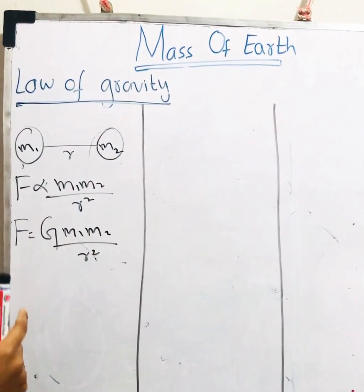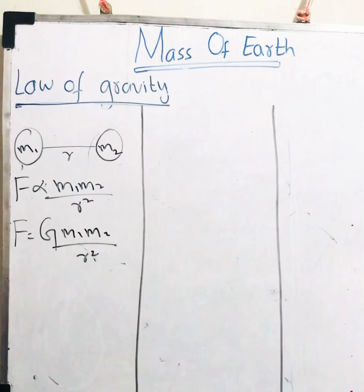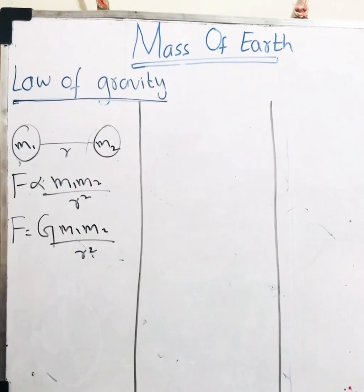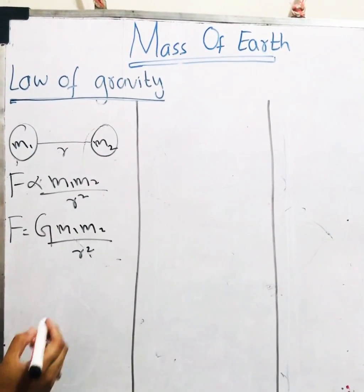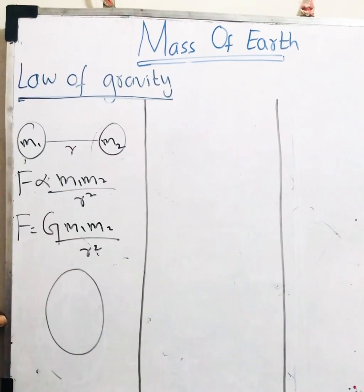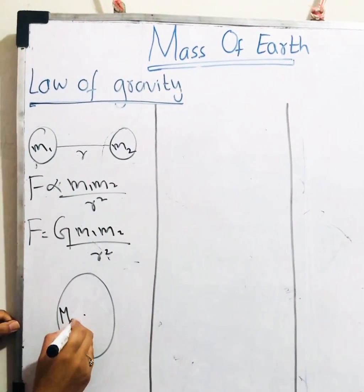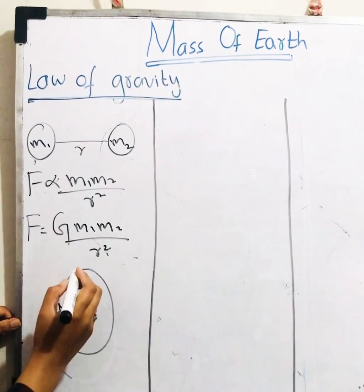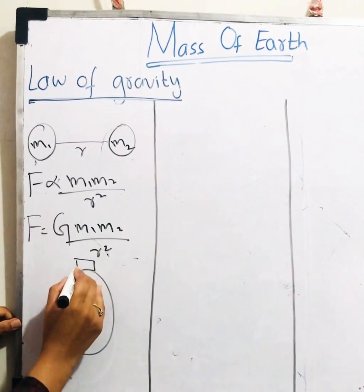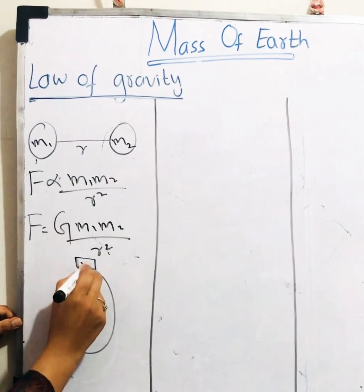If this law is clear for you, let's move to calculation of mass of Earth. For the calculation of mass of Earth, consider this is Earth. The center of Earth is here. The mass of Earth is capital M. Furthermore, assume object with a mass small m is placed on the surface of the Earth.